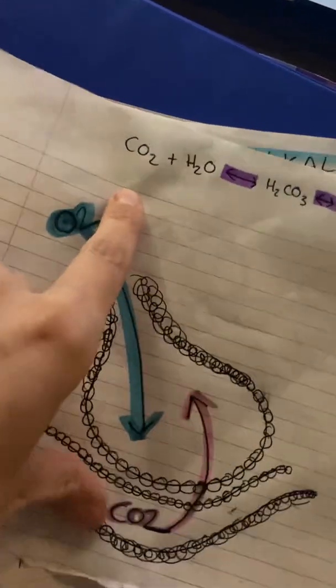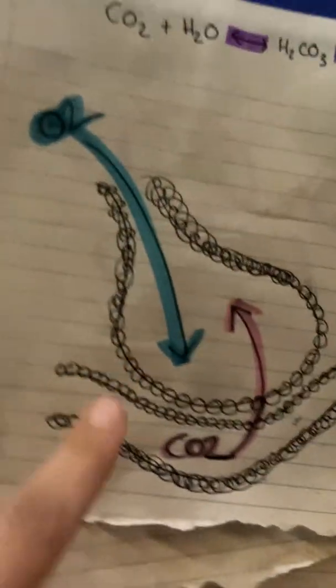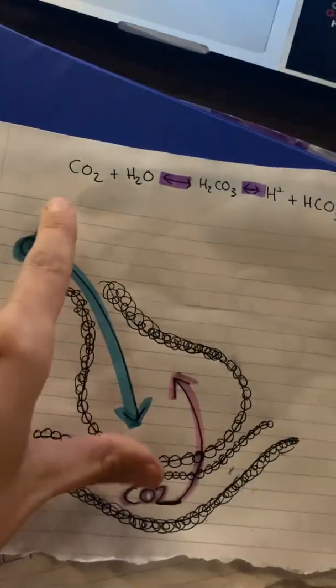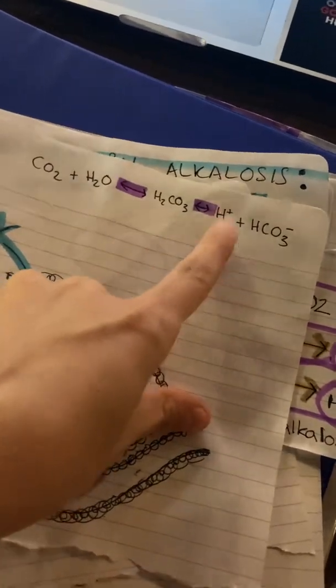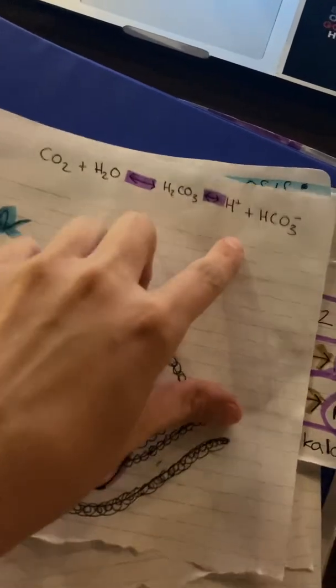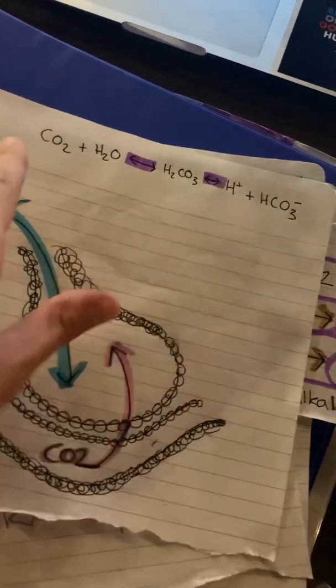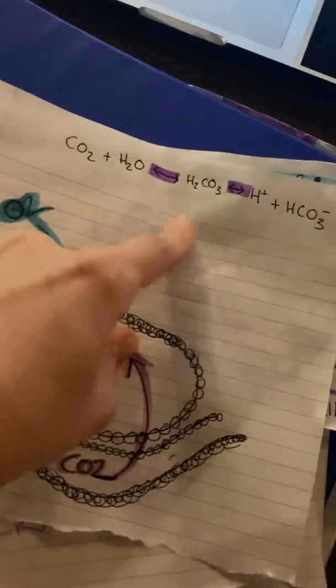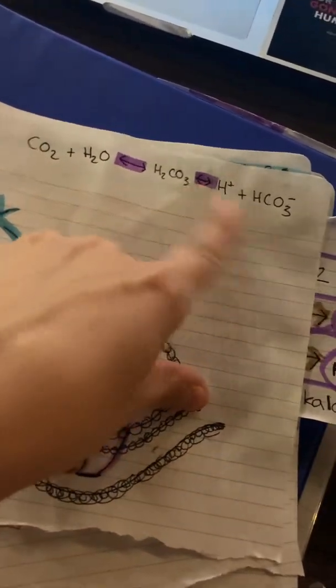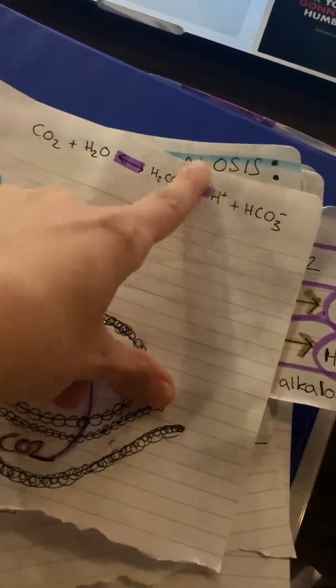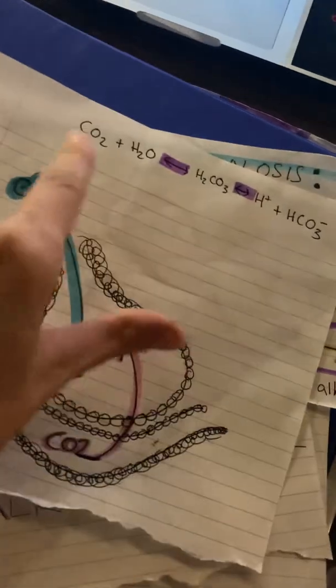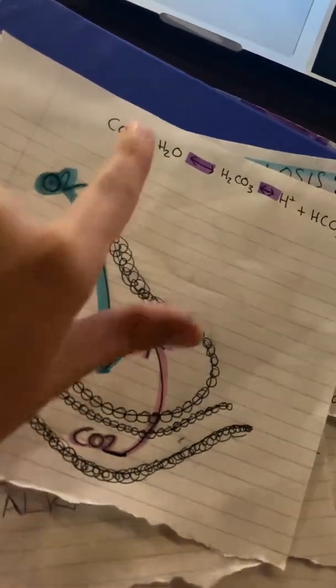Normally in the body you need a certain level of carbon dioxide to maintain equilibrium. Carbon dioxide and water come together to form carbonic acid, and carbonic acid turns into hydrogen and bicarbonate. When carbon dioxide goes low, this whole equation gets messed up — we don't have the ingredients to make carbonic acid, which means we don't have the ingredients to make hydrogen ions. So hydrogen becomes low.